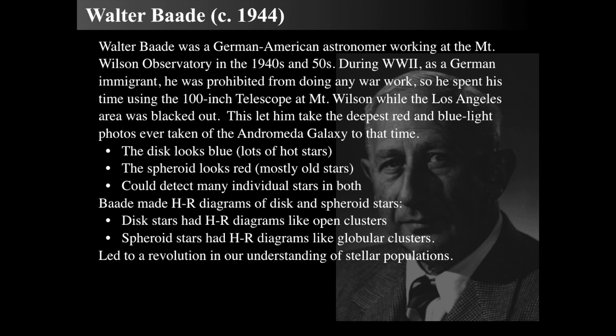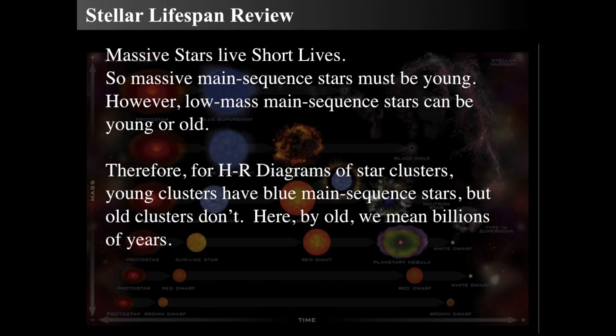Baade made HR diagrams based on blue and red colors — the brightness in the blue minus the brightness in the red compared to the brightness in the red or blue. Those HR diagrams showed that the disk's HR diagrams were very much like open clusters, while the spheroid's HR diagrams were very much like globular clusters. This led to the idea that they were completely different stellar populations.